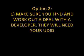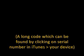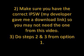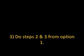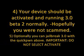Option 2. Step 1: Make sure you find and work out a deal with the developer. They will need your UDID — a long code which can be found by clicking on the serial number in iTunes for your device. Step 2: Make sure you have the correct IPSW. The developer may give you a download link, so you may not need the one from this video. Step 3: Do steps 2 and 3 from option 1. Step 4: Your device should be activated and running 3.0 beta 2 normally. Hopefully you are not scammed.